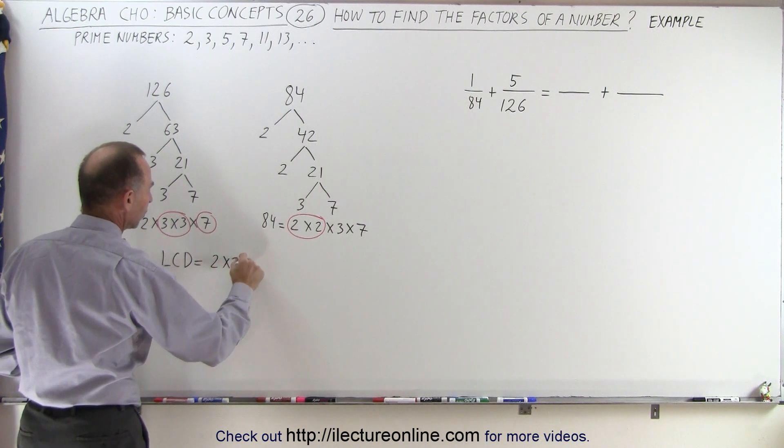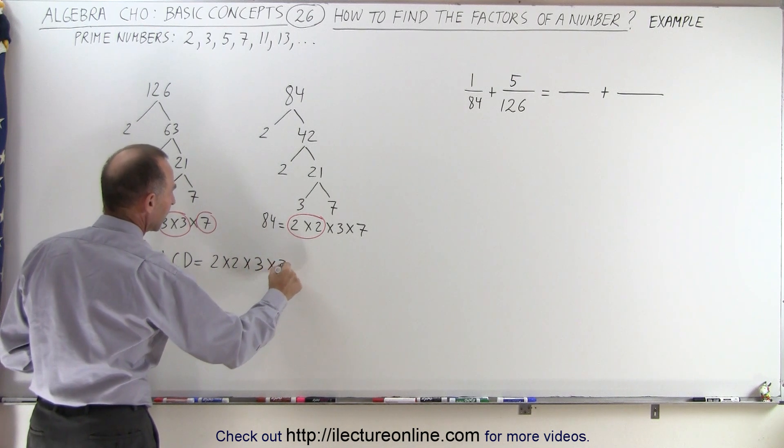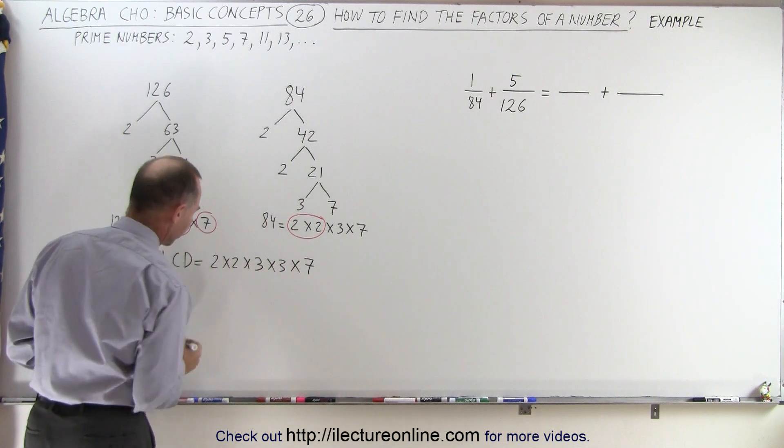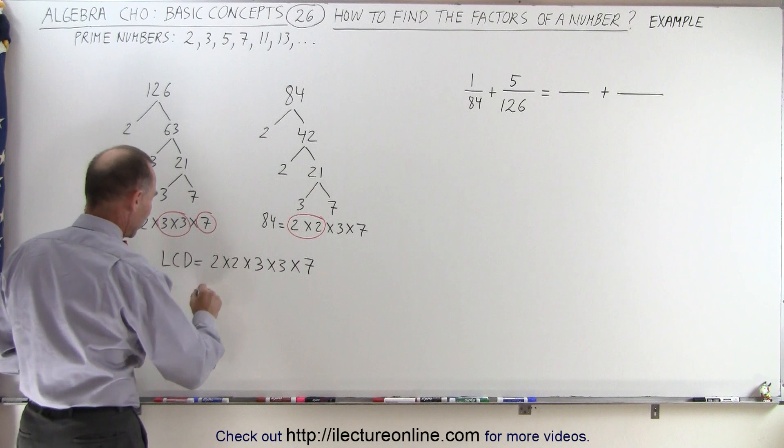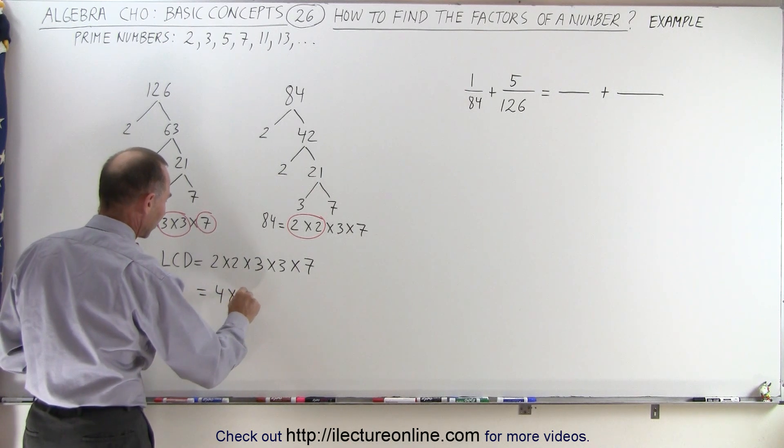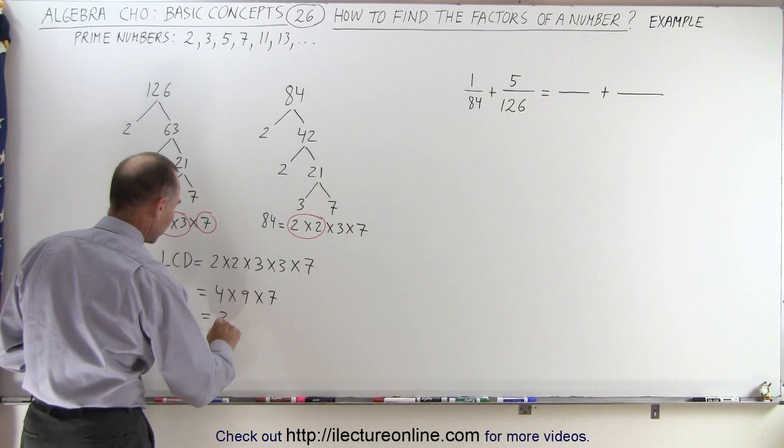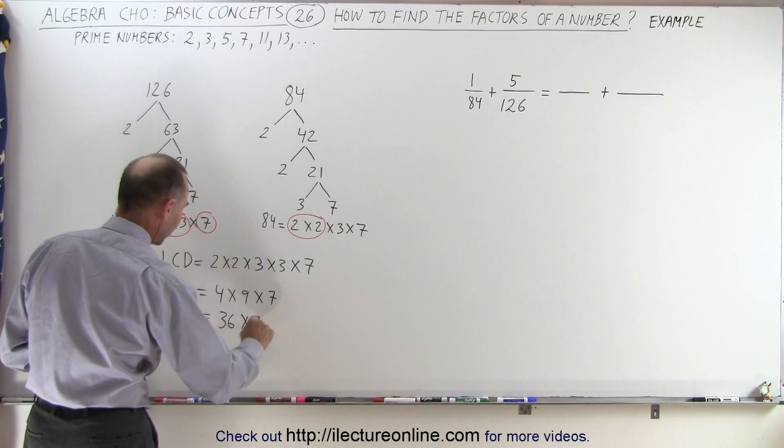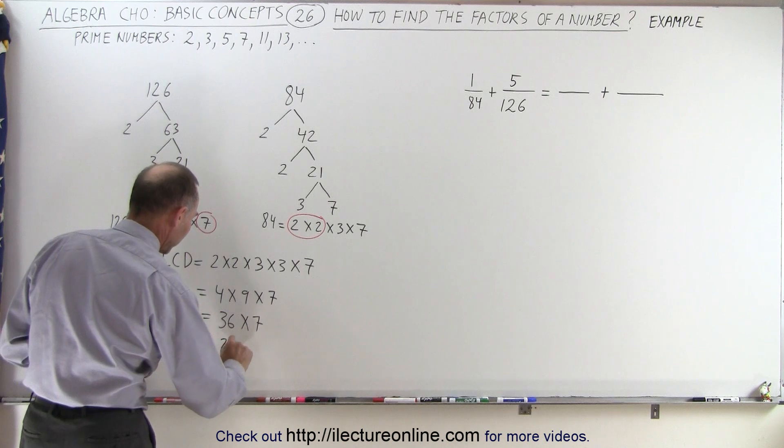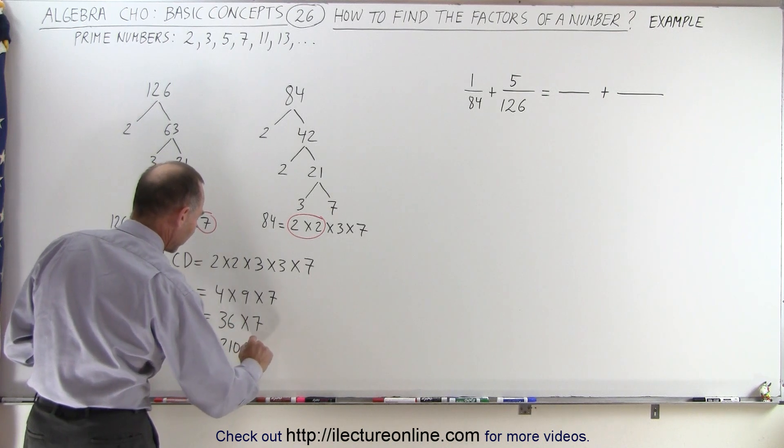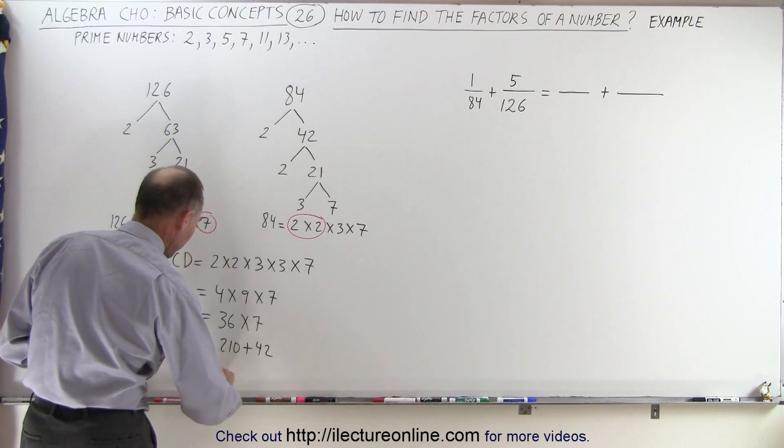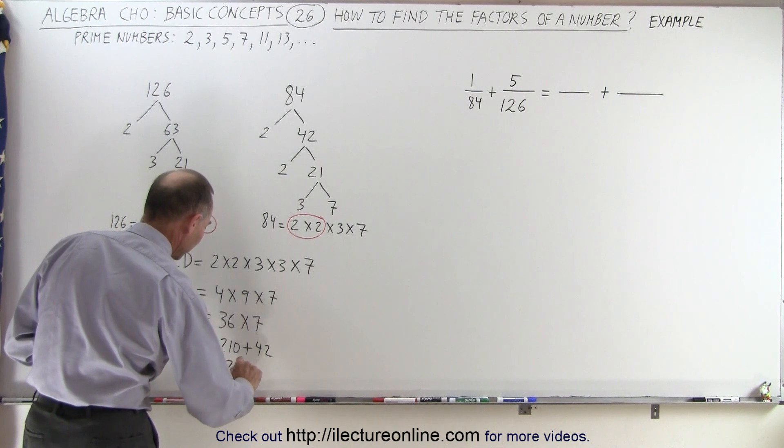That's 2×2×3×3×7, which equals 4×9×7. 4 times 9 is 36, times 7. 7 times 30 is 210, 7 times 6 is 42, so the common denominator is 252.